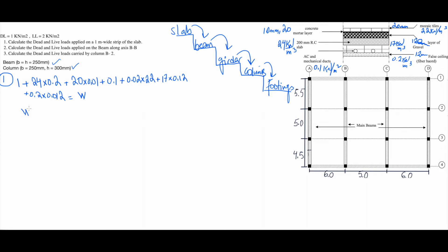If you do the math, the total dead load is 8.58 kilonewton per meter square. That's the dead load. The live load is fixed at 2 kilonewton per meter square. To convert to a 1-meter strip, you just multiply by 1 meter.